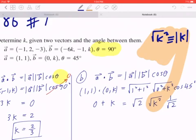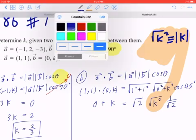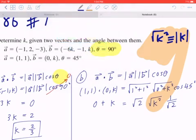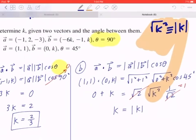So if you go back to the line now, this would give you, by collecting like terms, root 2 divided by root 2, that becomes a 1. And on the left hand side, you're going to write down k. On the right hand side, you're going to write down the absolute value of k.